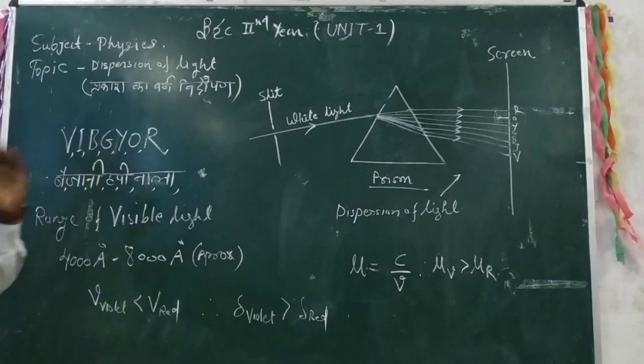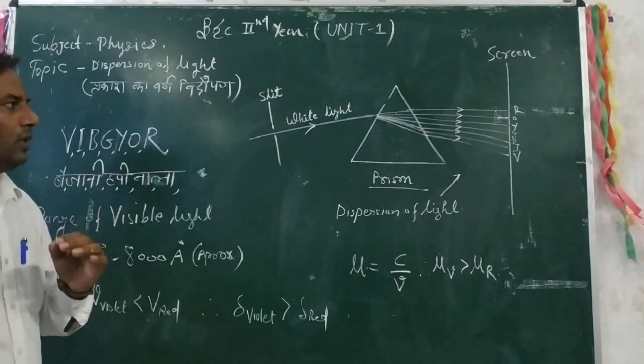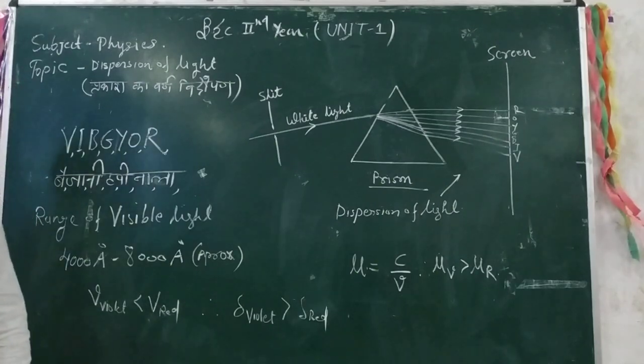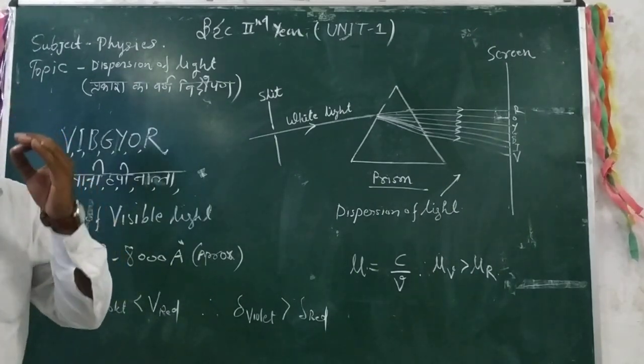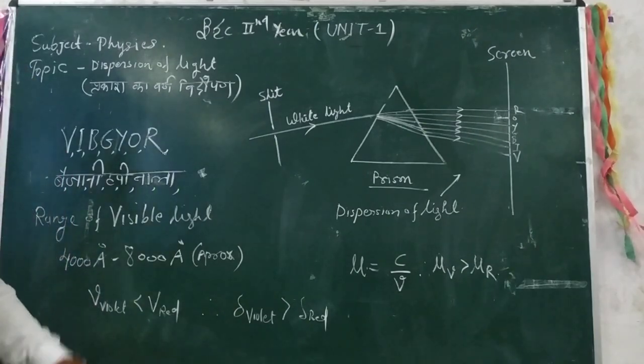This phenomenon is called Dispersion of Light or Prakash's word. Prakash का किसी prism से होकर अपने अवयवी रंगों में विवक्त हो जाना ही Dispersion of Light कहलाता है.